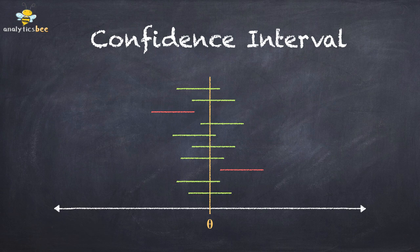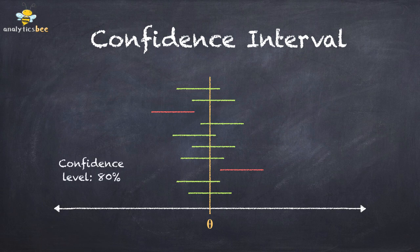Some of these intervals cover the true value, theta, while others do not. In this particular example, 8 out of the 10 interval estimates cover the true value, theta, while two of them do not cover it, so the confidence level is 80%.